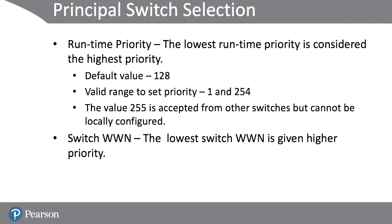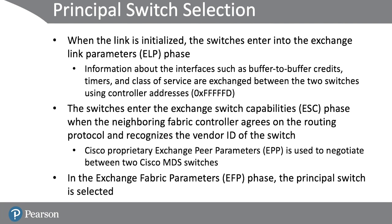If you do not configure a domain ID, the local switch assumes a random domain ID. For the principle switch selection, the lowest runtime priority is considered the highest priority. The default value is 128 and the highest value is 254. The value 255 is accepted from other switches but cannot be locally configured. The switch with the lowest WWN number is given higher priority, or if you are configuring the priority, the lowest runtime priority value is considered the highest priority and that switch is selected as the principle switch.